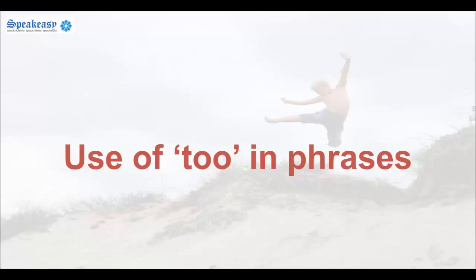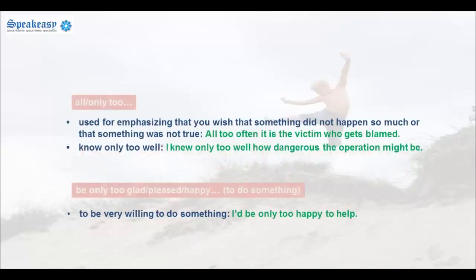Now let's look at the use of 'too' in phrases. 'All too' or 'only too' is used for emphasizing that you wish something did not happen so much, or that something was not true. For example: 'All too often it is the victim who gets blamed.' This also appears in the phrase 'know only too well': 'I knew only too well how dangerous the operation might be.' 'Be only too glad, pleased, or happy to do something' means to be very willing to do something: 'I'd be only too happy to help you.'